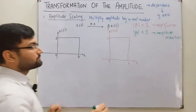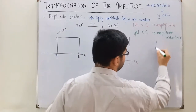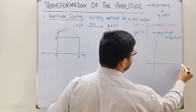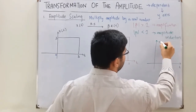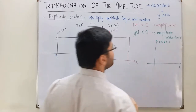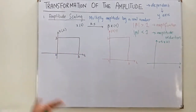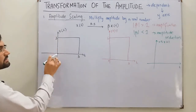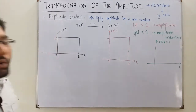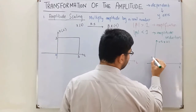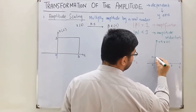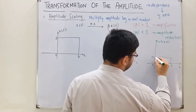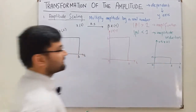For amplitude reduction, take β = 0.5. The new signal is 0.5·x(t). The amplitude at each instant is multiplied by 0.5: 3 × 0.5 = 1.5. So the amplitude drops to 1.5 and stays 1.5 from 0 to 3. That is the function.